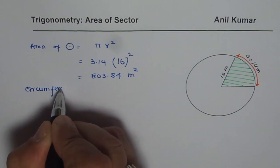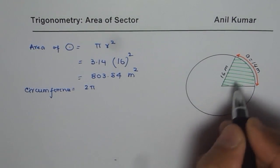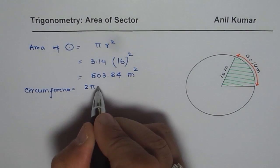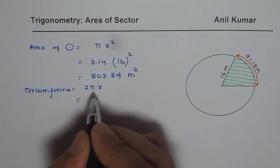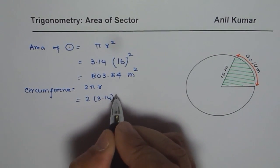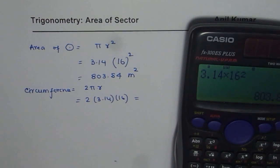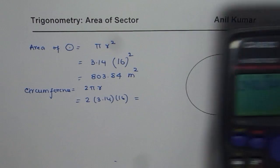Circumference formula is 2 pi r. 2 pi and radius is given to us as 16. Let us use the values 3.14 for pi, radius is 16 and let us calculate this value. So it equals 2 times 3.14 times 16 equals 100.48.